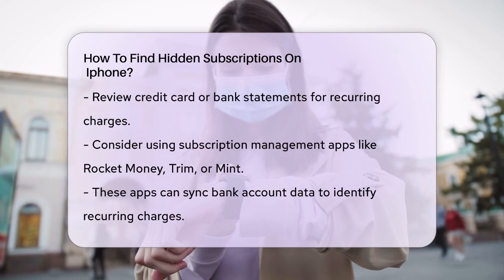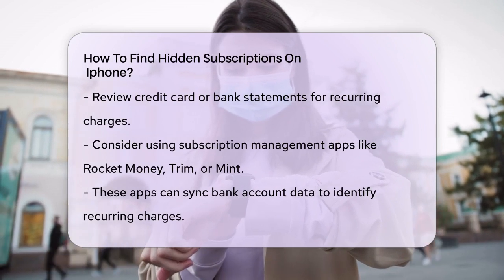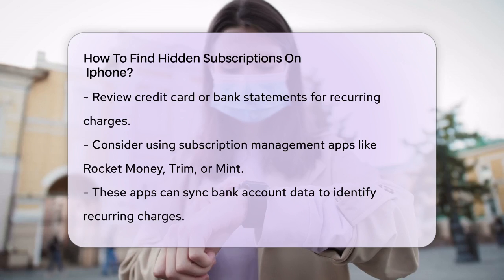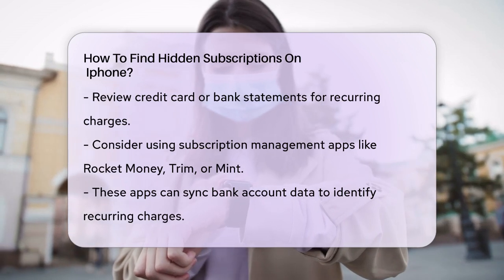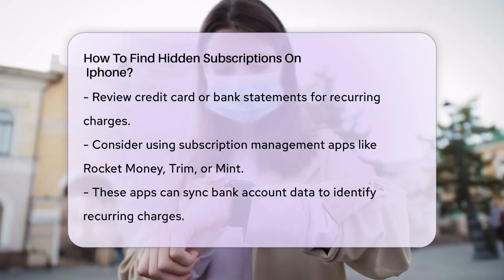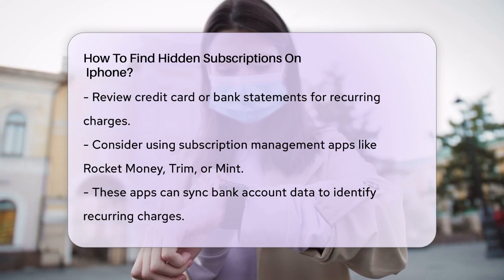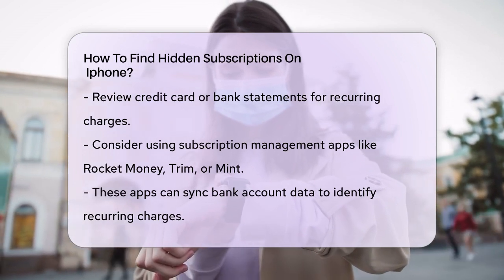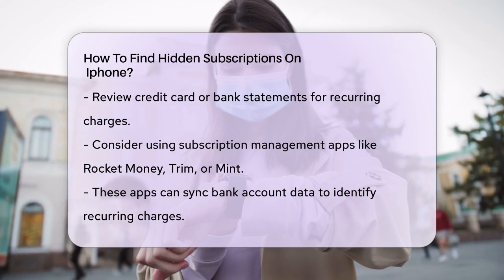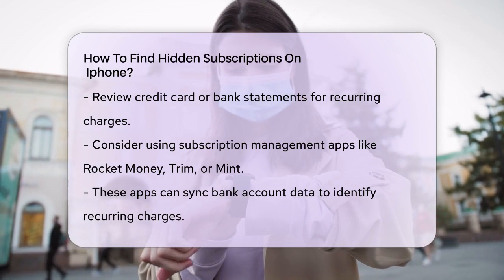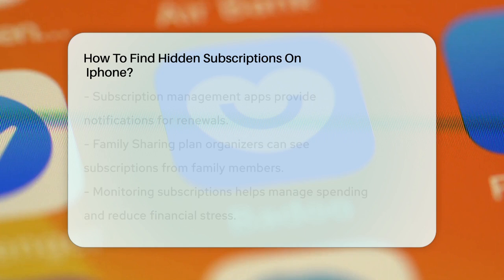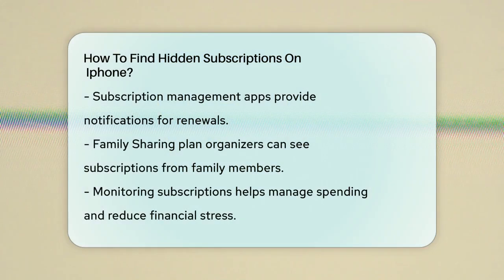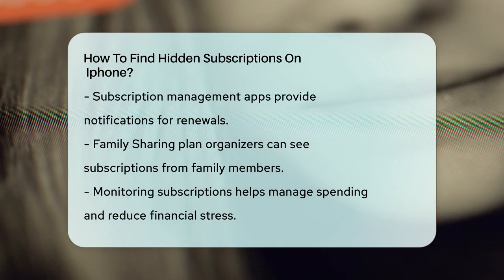Another way to manage all your subscriptions in one place is by using a subscription management app. Apps like Rocket Money, Trim, or Mint can sync your bank account and payment card data to identify recurring charges. These apps will show you all your subscriptions in a clear format and even offer features like notifications for upcoming renewals and the ability to cancel subscriptions directly from the app.